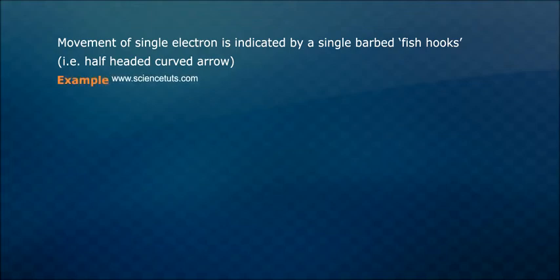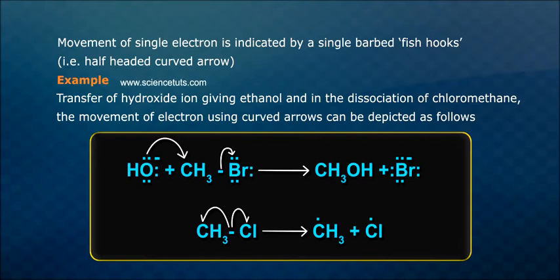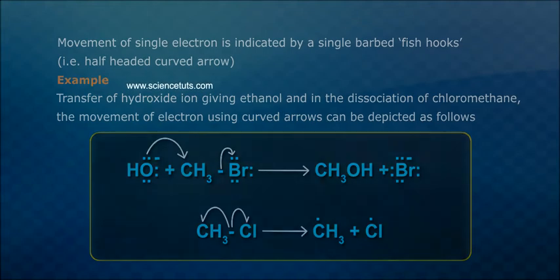Example: Transfer of hydroxide ion giving ethanol, and in the dissociation of chloromethane, the movement of electrons using curved arrows can be depicted as follows.